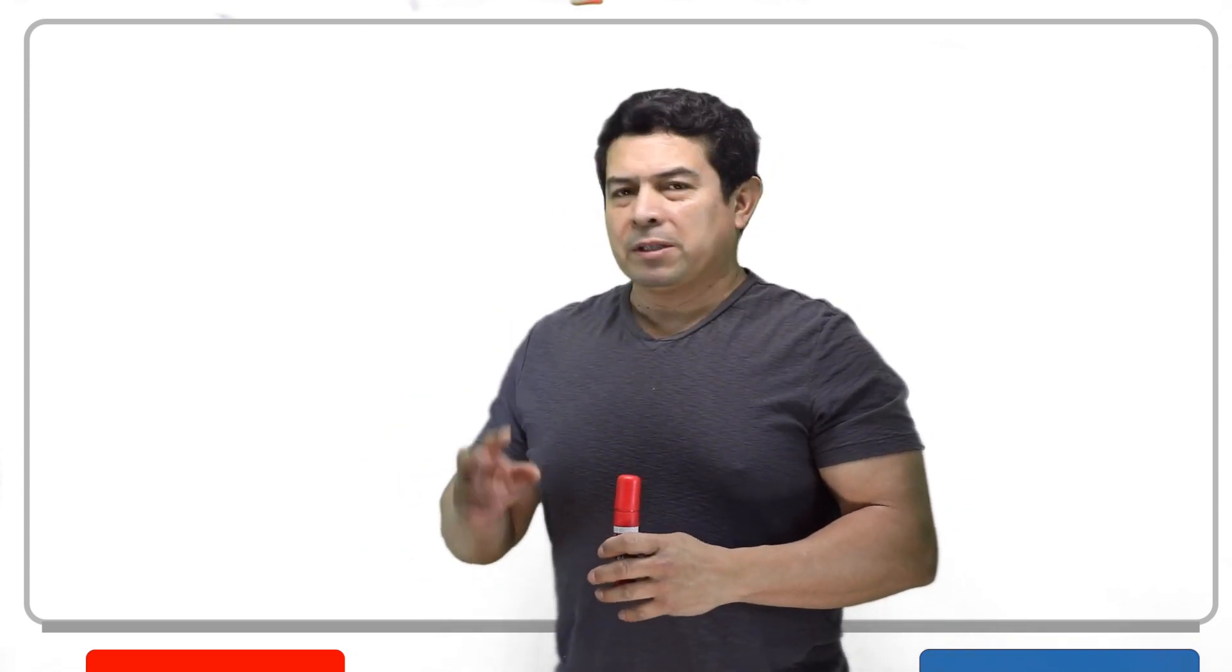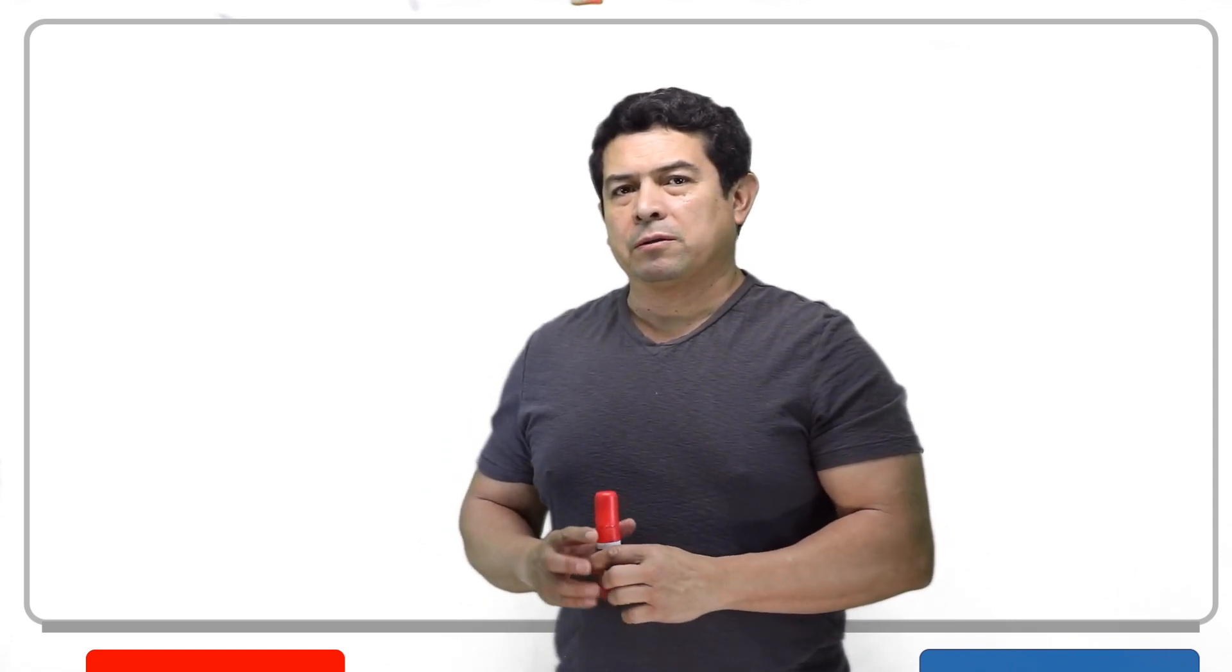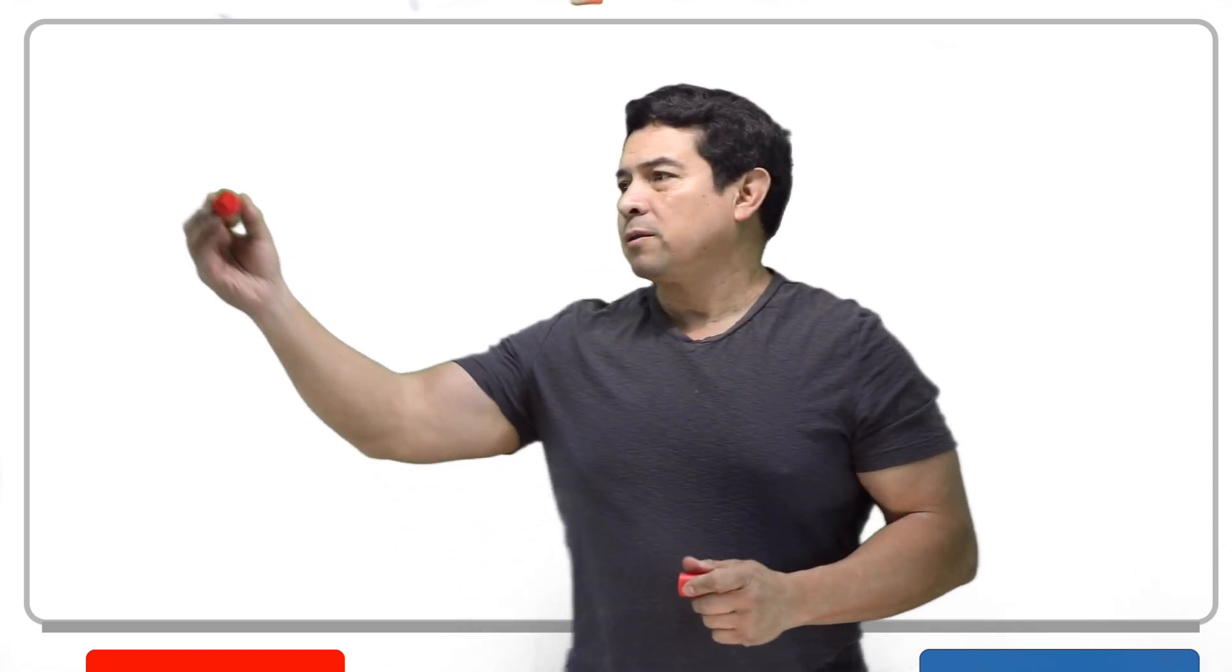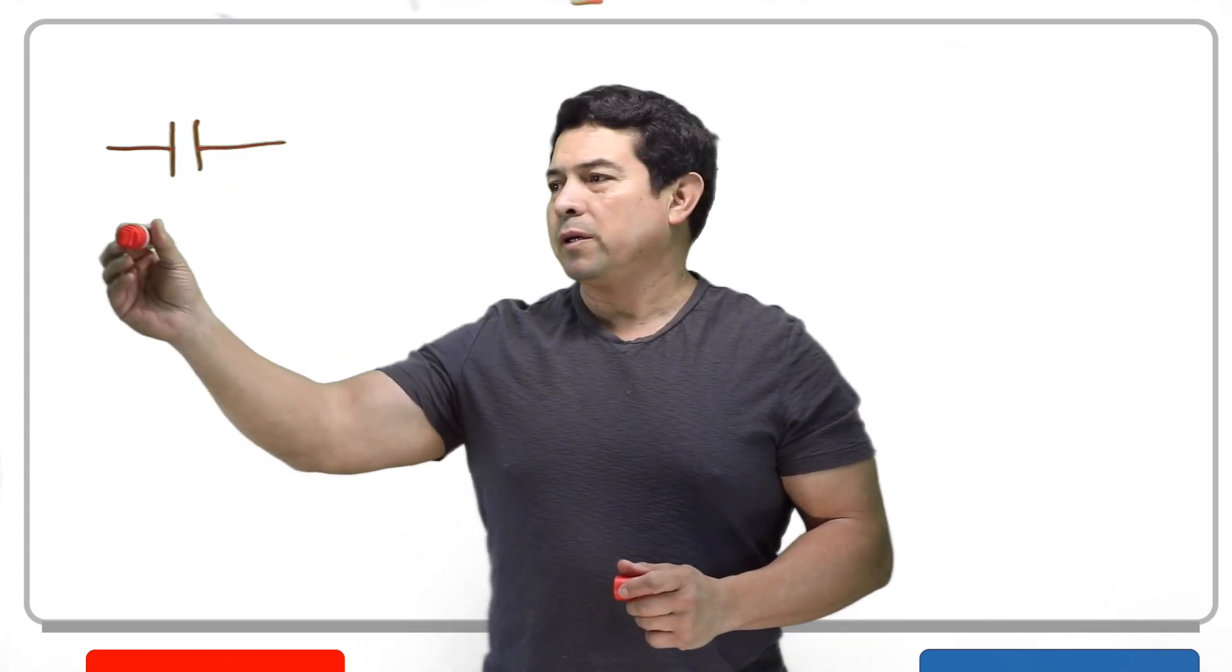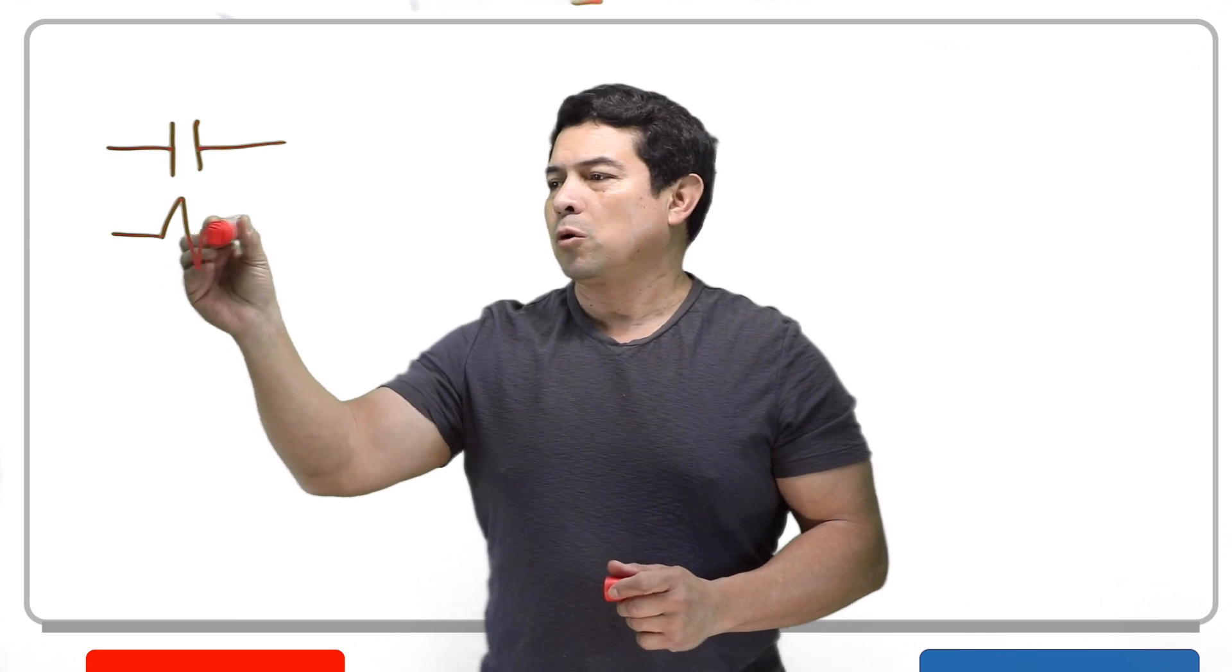On a contactor, you're basically going to have two parts. One is going to be your contact, and then the other one is going to be your coil.